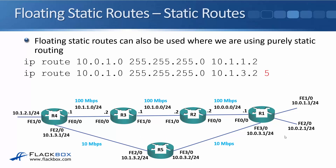You can also use floating static routes where you're using static routes only. On R4, I could have a first-choice route to 10.1.1.2 on R3, and a second-choice route for the 10.0.1 network going to 10.1.3.2 on R5, by giving it an administrative distance of 5. If both routes are entered without an administrative distance, the router would load balance between them. By adding the second route with an AD of 5, only the first route makes it into the routing table. But if the link from R4 to R3 goes down, it will be removed and the second route will be used instead.